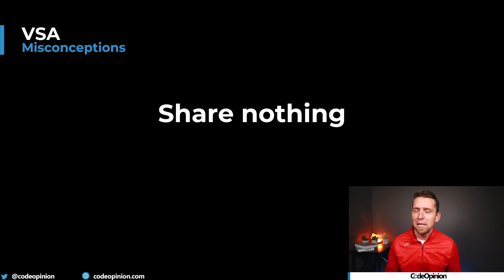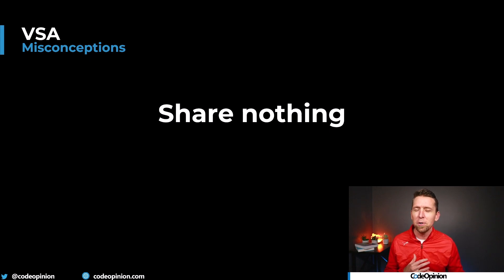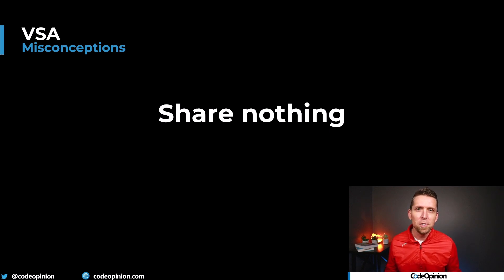Easily the number one misconception — not even close — is this question, comment, or confusion around the idea of 'share nothing,' or: how do you share between slices or between features? I think the reason for this misconception is because people want features to be completely independent. When that's not really the case — oftentimes there's a relation between the two. That could be workflow, or commands or queries and a subset of them. That's actually what the feature is, and this is actually pretty common.